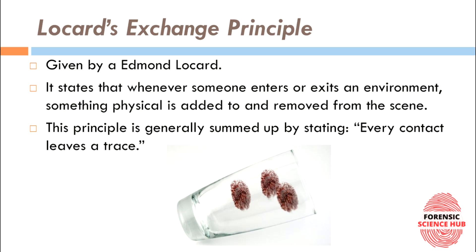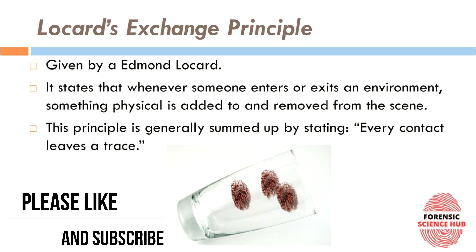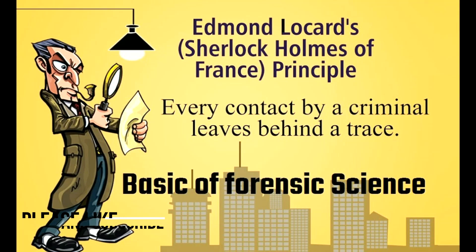For example, as seen in the picture, someone has touched the glass with their hands. What happened is a transfer of fingerprint from the hand of the person onto the glass surface, and from the glass surface, certain dust or tiny particles would have transferred onto the hands of the person. So there was an exchange from both sides — fingerprints from the hands and dirt from the glass surface. In order to sum up: every contact leaves a trace.